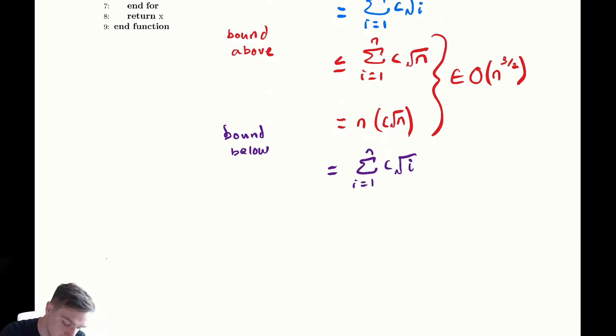So instead of going from one to n we go from one to n over two and then we include the rest of the terms from n over two plus one to n of c radical i.